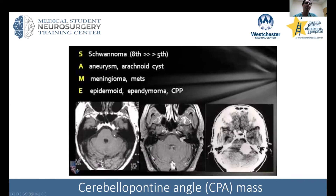One is a schwannoma, along the vestibular nerve most commonly — cranial nerve 8. People refer to that as an acoustic neuroma. Those patients usually present with a combination of vertigo, hearing loss, and tinnitus. You can see this lesion is right in the CP angle, tracking out along the nerve. Reasons for surgery would be if they're compressing on the brainstem as they grow.